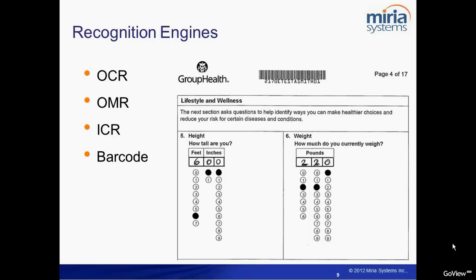DataCap has four different recognition engines. First is OCR (Optical Character Recognition) for reading typewritten information. Second is OMR (Optical Mark Recognition), which reads filled dots or marks and interprets them as data values. Third is ICR (Intelligent Character Recognition) for reading handprint data — for example, a height of 6 feet 0 inches written by hand. Fourth is barcode recognition. The combination of all these engines means you don't need to do any data entry.